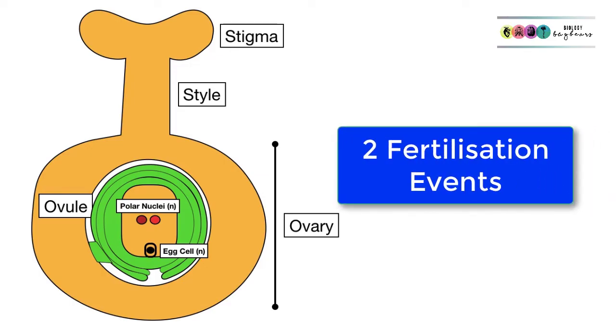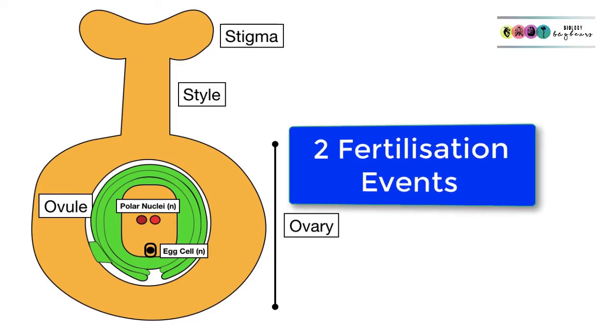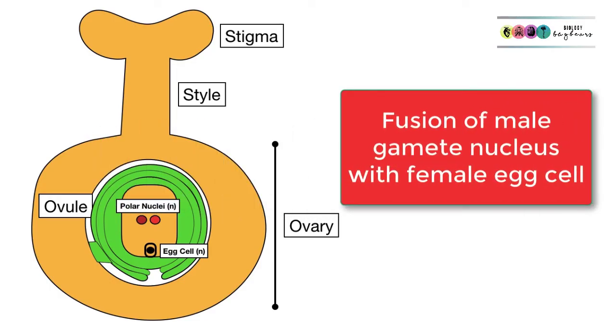So there were two fertilisation events. Remember we started off with this embryo sac, and inside the embryo sac in the ovule was the female egg cell and those two polar nuclei. The first fertilisation event was the fusion of the male gamete nucleus with that egg cell to form a diploid zygote. That becomes the embryo plant.